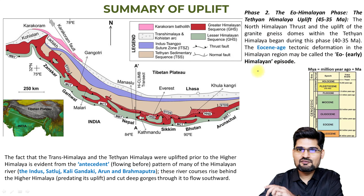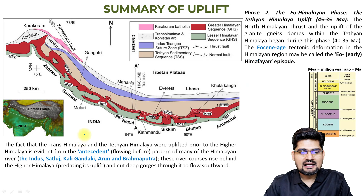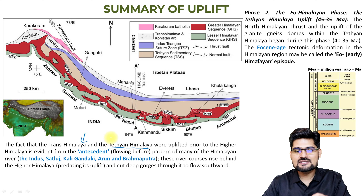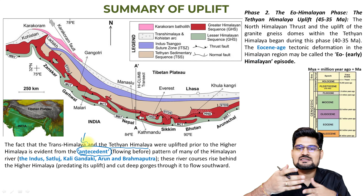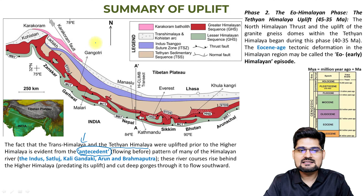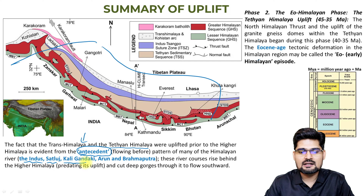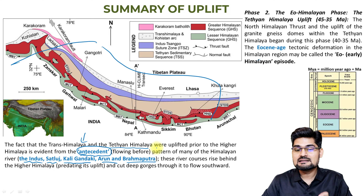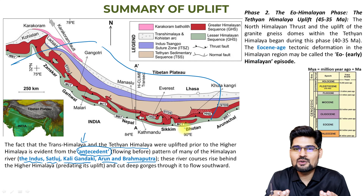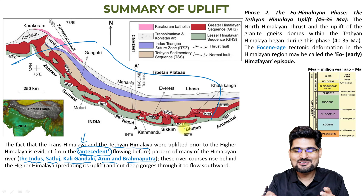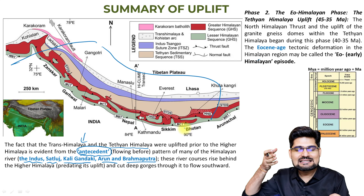The second phase is the Eo-Himalayan phase, or Tethyan Himalayan Uplift, from 45 to 35 million years ago — Eocene, which is why it's called 'Eo.' During this phase, antecedent rivers were formed. Antecedent rivers cut across mountains and flow to the other side. Examples include the Indus, Satlaj, Kali Gandaki, Arun, and Brahmaputra. These rivers predate the mountains, cutting across even as upliftment was occurring.